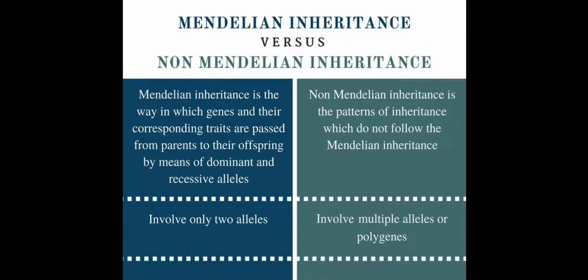Mendelian inheritance is a way in which genes and their corresponding traits are passed from parents to their offspring by means of dominant and recessive alleles. The main difference is that in Mendelian inheritance, characters are transferred from parents to offspring by means of dominant and recessive alleles.